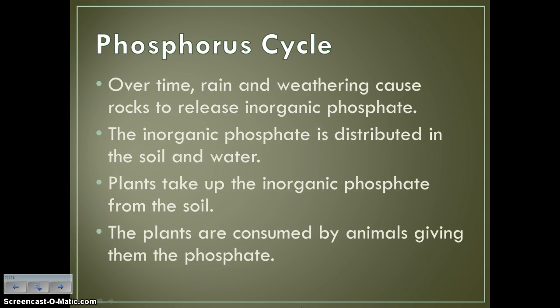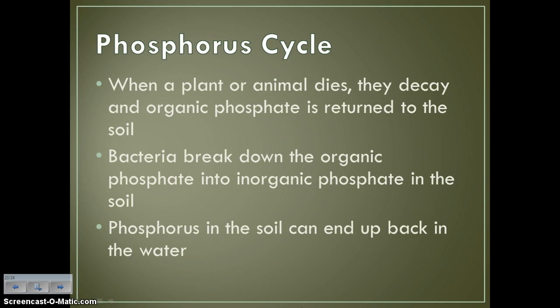Over time, rain and weathering cause rocks to release inorganic phosphate from a non-living source. That inorganic phosphate is distributed through the soil and the water. Plants are responsible for taking up that inorganic phosphate by absorbing it through their roots, and then those plants full of phosphates are consumed by animals, giving them the phosphate. When a plant or animal dies, they decay and organic phosphate is returned to the soil. Bacteria decompose the organic phosphate into inorganic phosphate in the soil, and the phosphorus in the soil can end up back in the water.